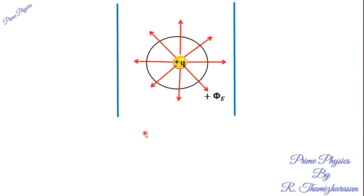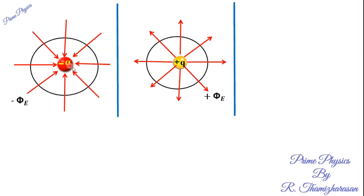Now let's consider individual charges. For an isolated positive charge, the electric field lines go outward through the closed surface, so the flux is positive. For a negative point charge, the electric field lines go inward into the surface, so the flux is negative.